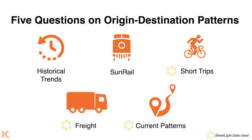The first couple of questions used historical data on origin-destination, which was not available from Streetlight. The second looked at origin-destination patterns along our commuter rail system called SunRail — I'll describe why we tried using Streetlight data for that but it didn't really work out. The last three questions did use Streetlight data: short car trips, freight and goods movement throughout the region, and a broad analysis of current origin-destination patterns regardless of mode.